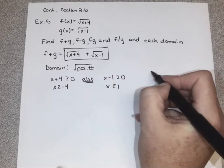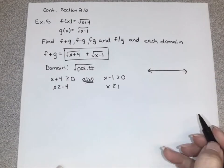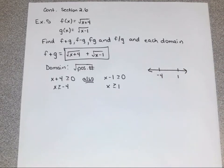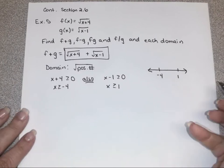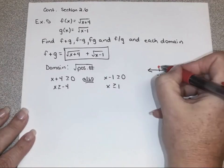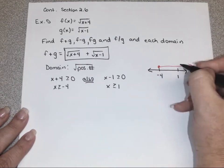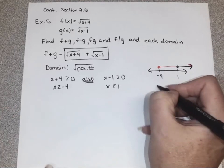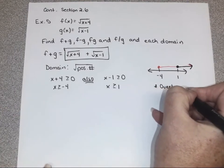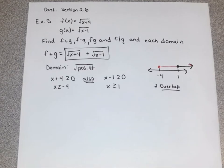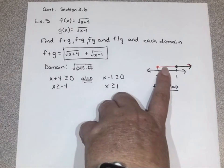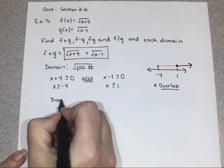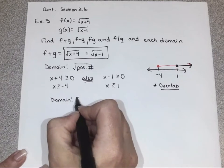But you want both of these things to happen — it can't work for one and not the other. So when you go to graph this, graphing is helpful if we're trying to find interval notation. On the one hand, greater than negative 4 looks like this. But on the other hand, greater than 1 looks like this. It turns out that you want the overlapped section, because you want it to work for both. Anything in the red is not going to work, so the domain would just be everything from 1 to infinity.